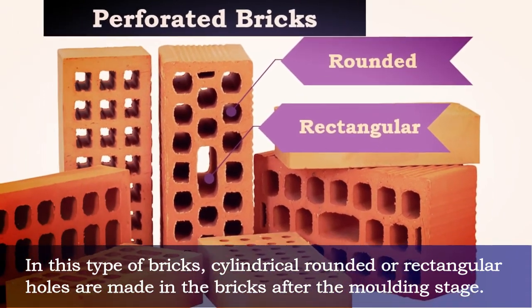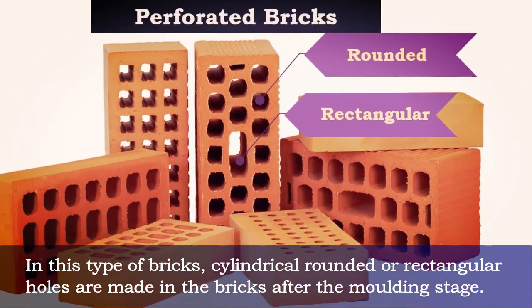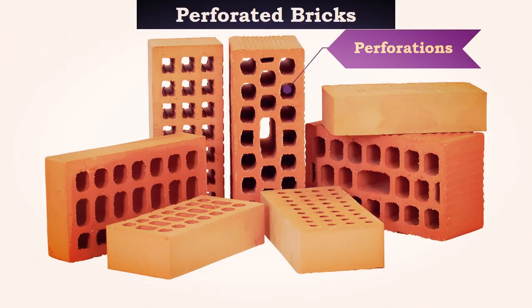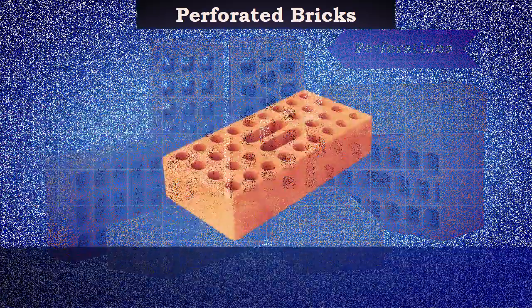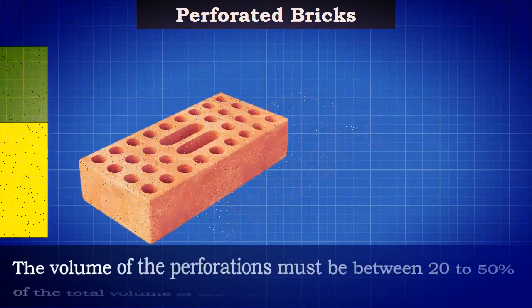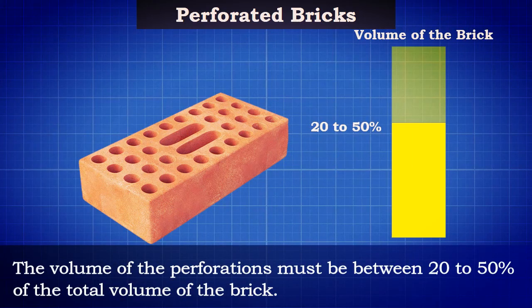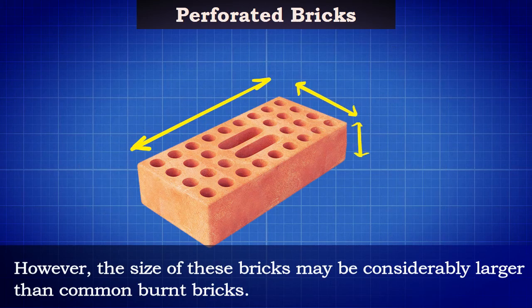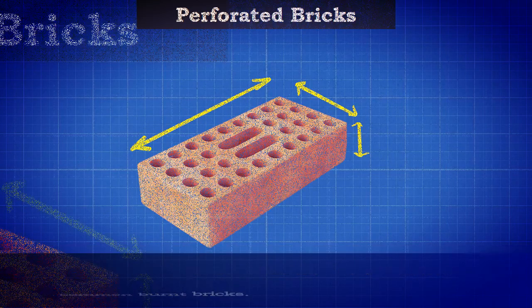These types of holes are called perforations. These holes are evenly spaced from the sides, and the minimum distance between the holes is 15 mm. The volume of the perforations must be between 20–50% of the total volume of the brick. However, the size of these bricks may be considerably larger than common burnt bricks.